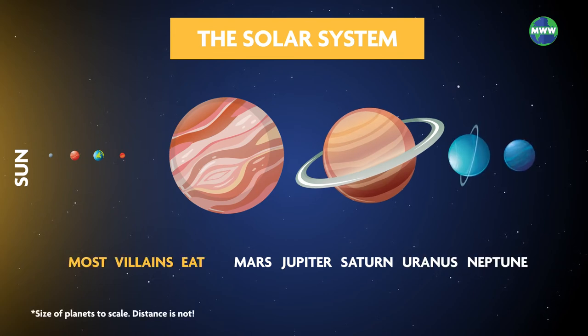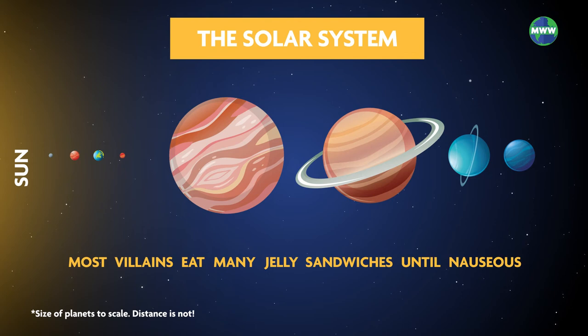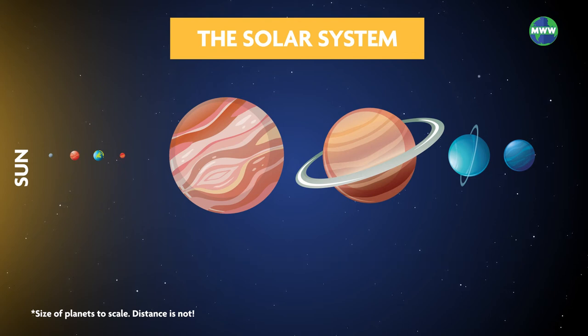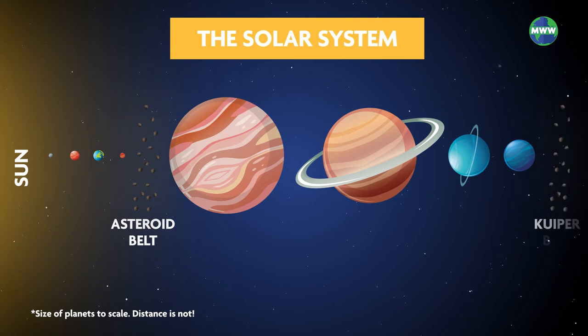Most villains eat many jelly sandwiches until nauseous. In between Mars and Jupiter lies the asteroid belt. Beyond Neptune is the Kuiper belt.